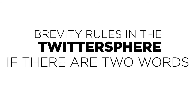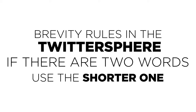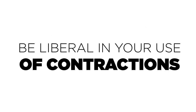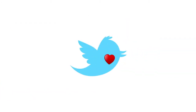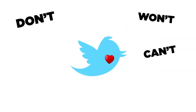If there are two words that do a good job conveying your message, use the shorter one. Be liberal in your use of contractions. Your high school English teacher might not like them, but Twitter loves them. Can't, won't, don't, we're, you're, and so forth should be near the top of your toolbox.